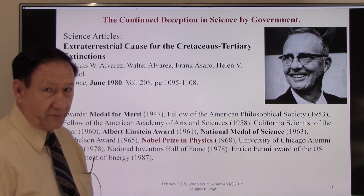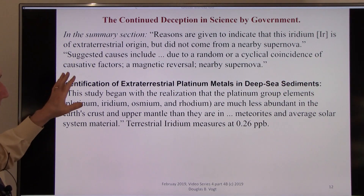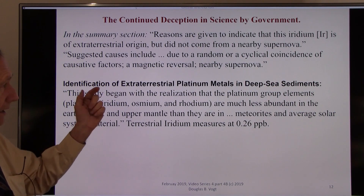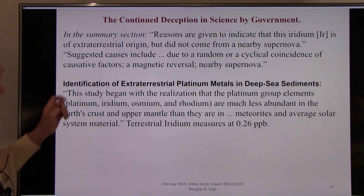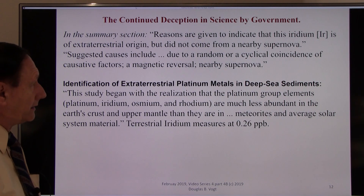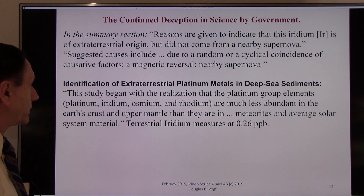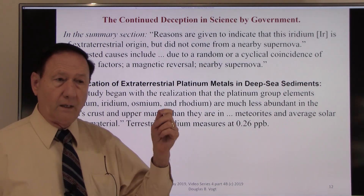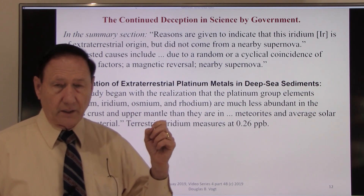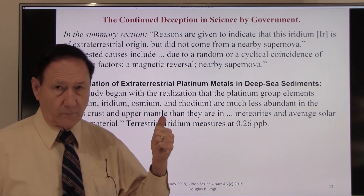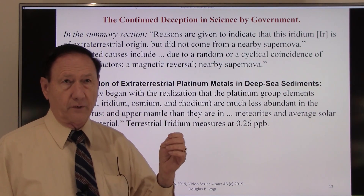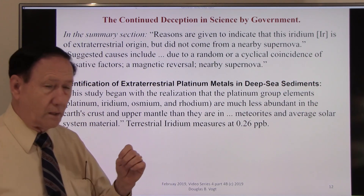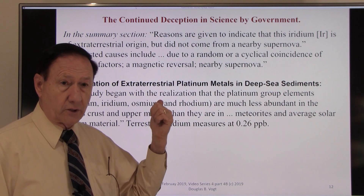These are direct quotes from the journal article. Anything in brackets is something I added for clarity. In the summary, reasons are given to indicate that the iridium is extraterrestrial in origin. This paper resulted from expeditions to Italy and Denmark — he must have spent at least a year and a half doing the research. Working backwards, figure three to four months for peer review and publication — so he was doing this research after he received a copy of my book.